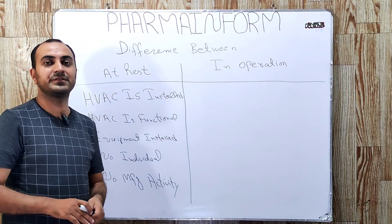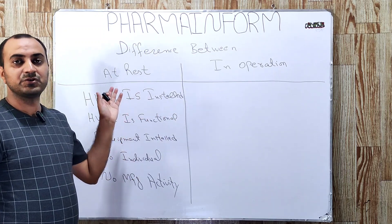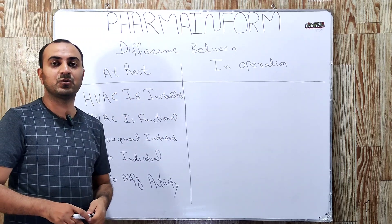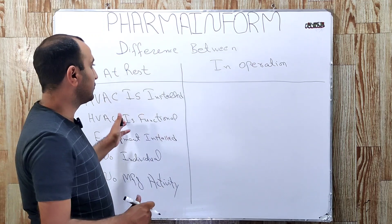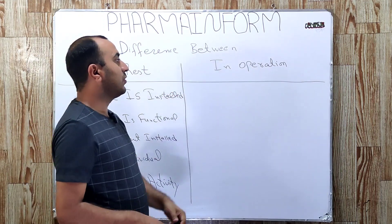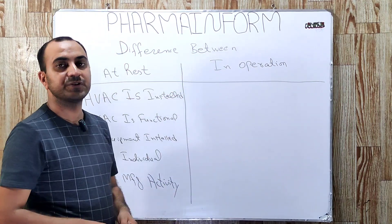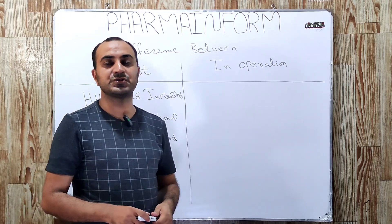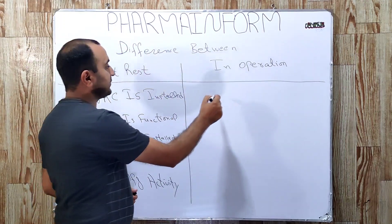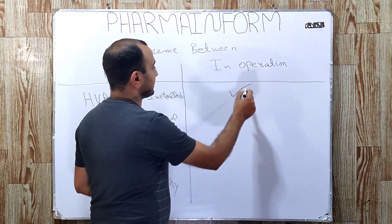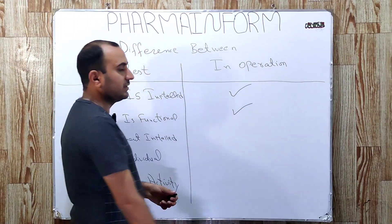There is a different level of particle count at rest, which you can learn by watching the video — the link is given in the description on clean rooms. Now, what is in operation? In operation is the condition of a clean room where HVAC is installed and HVAC is functional, and equipment is installed.